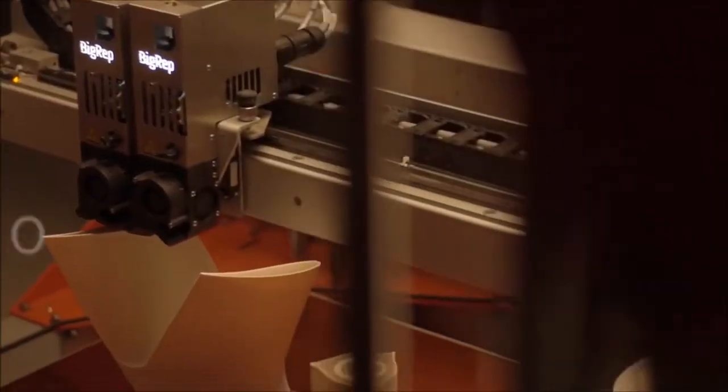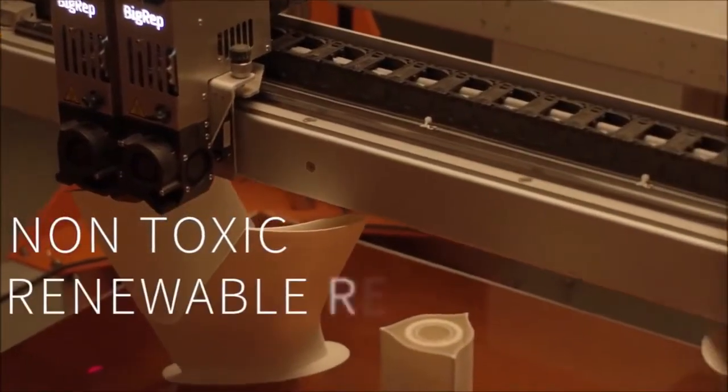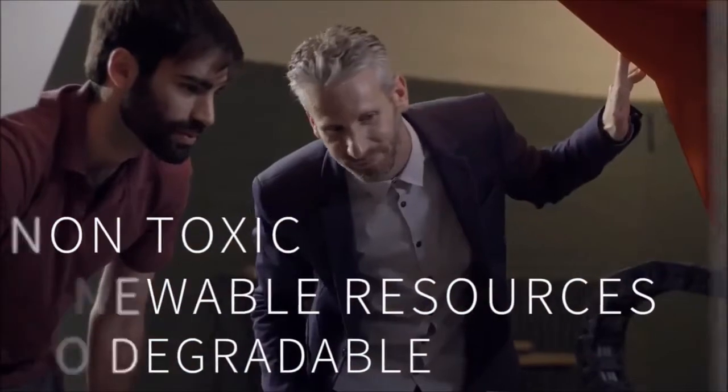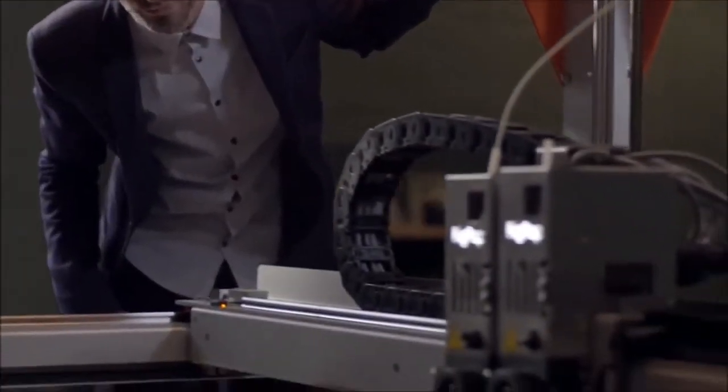The Pro-HT can be used as an ABS alternative for room-temperature printers. However, unlike ABS, the Pro-HT is completely non-toxic, derived from renewable resources, and is fully biodegradable.